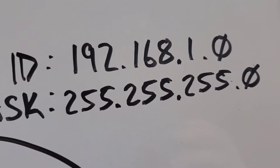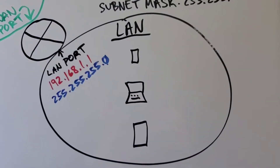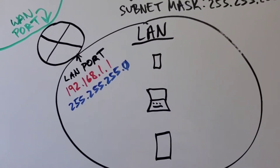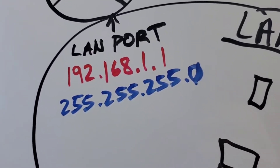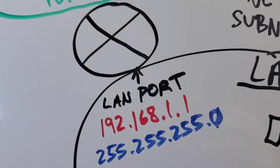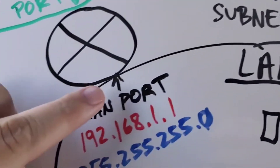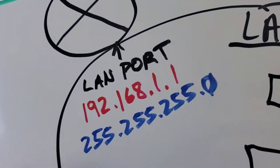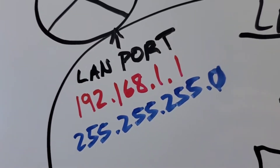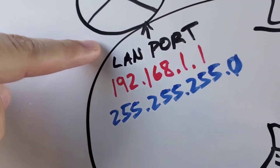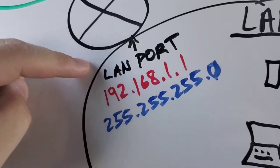Everything else between zero and 255 will be usable as clients on our network. While it's not a requirement, it is typical for the very first IP in your IP scheme to be used for the router. You can use any IP address within that network for your router, but it's just typical to use the very first IP. That's why you'll usually see 192.168.1.1 assigned to the router automatically when you turn the router on.